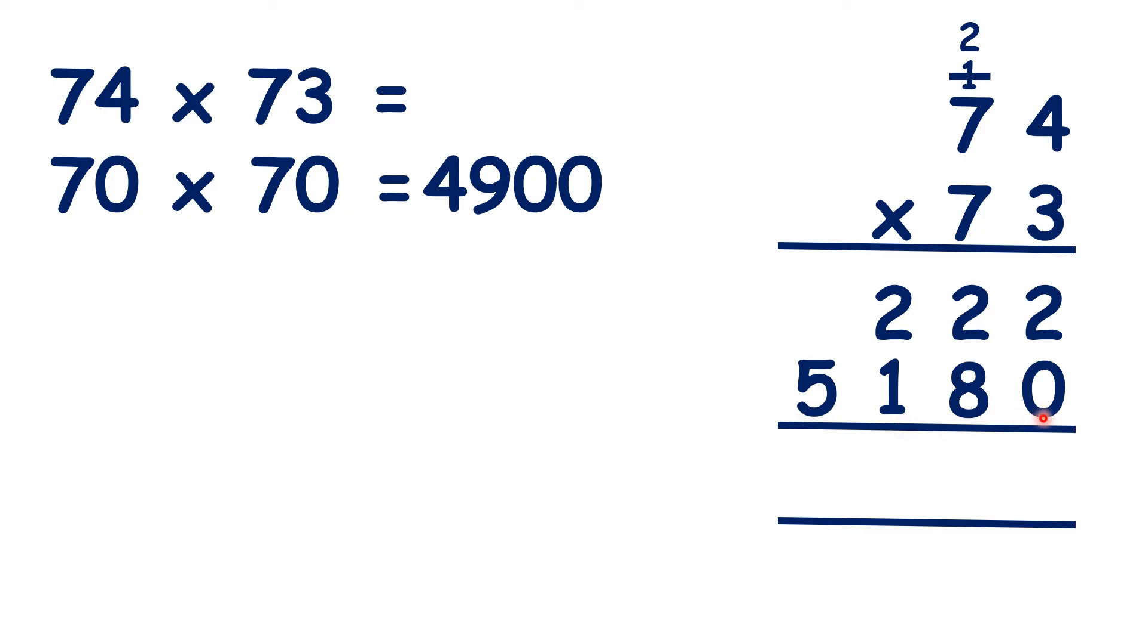Now, if we add up our answers, 2 plus 0 is 2, 2 plus 8 is 10, 1 plus 2 plus 1 is 4, and nothing plus 5 is 5.